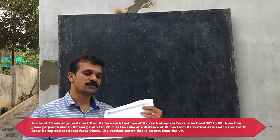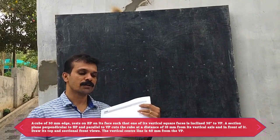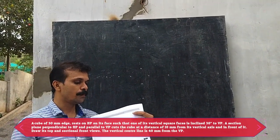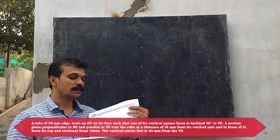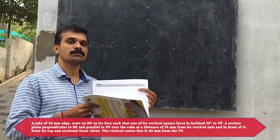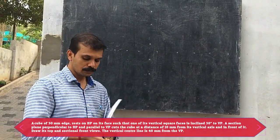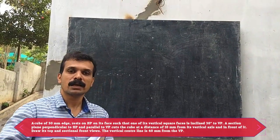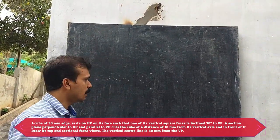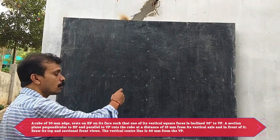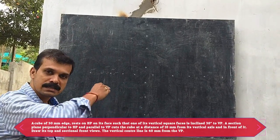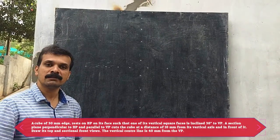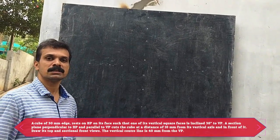The section plane cuts the cube at a distance of 10mm from its vertical axis and in front of it. Draw its top and sectional front views. The vertical center line is 40mm from the view. First we have to construct the cube, and it is given that one of the sides of that cube is inclined at an angle of 30 degrees to VP — that is one condition.